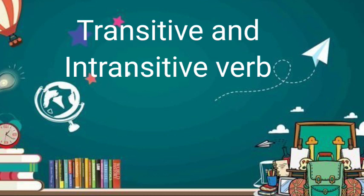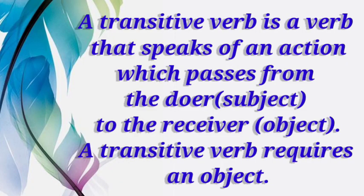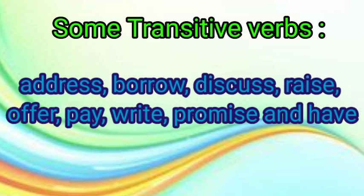Good morning and welcome to this English online session. Today's topic is transitive and intransitive verbs. A transitive verb is a verb that speaks of an action which passes from the doer — that is the subject — to the receiver — that is the object. A transitive verb requires an object. It answers the question 'what.' Some transitive verbs are: address, borrow, discuss, raise, offer, pay, write, promise, and have.